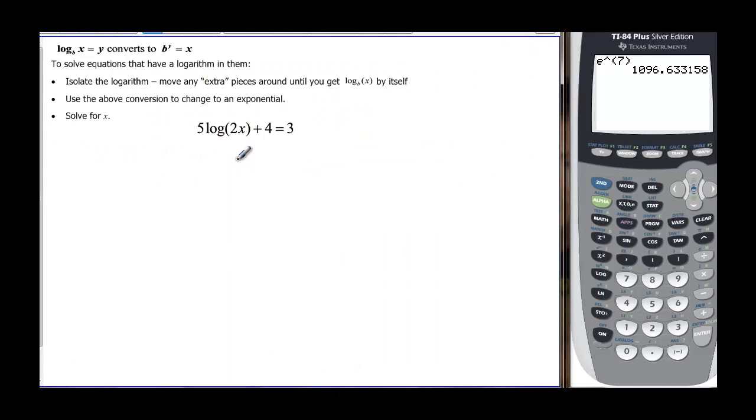But what happens when we get a more involved looking log problem? Again, we peel the layers. This five is right next to the log, this four has a plus in the middle, so we have to move it the farthest thing away first. Outside layer would be plus four of that onion. So we have 5 log(2x) is equal to, subtracting four from both sides, we'd have negative one. And if I divide by five, because remember we want to get this log all by itself, so we have to divide the five off.